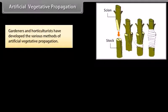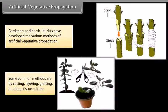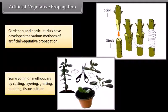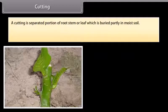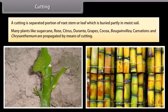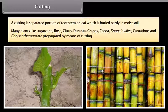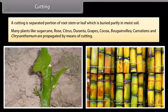Gardeners and horticulturists have developed various methods of artificial vegetative propagation. Some common methods are by cutting, layering, grafting, budding, and tissue culture. A cutting is a separated portion of root, stem, or leaf which is buried partly in moist soil. Many plants like sugarcane, rose, citrus, duranta, grapes, cocoa, bougainvillea, carnations, and chrysanthemum are propagated by means of cutting.